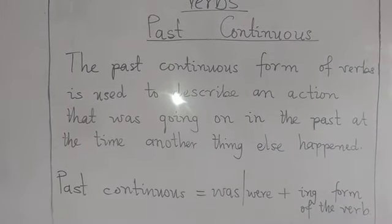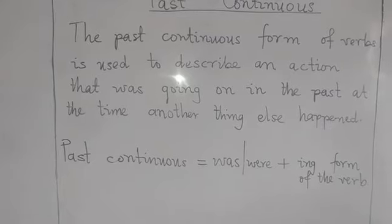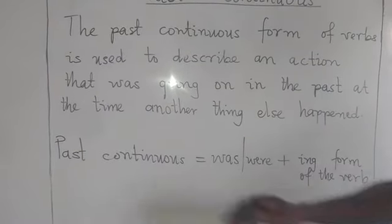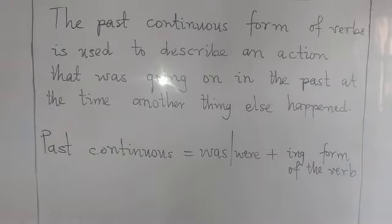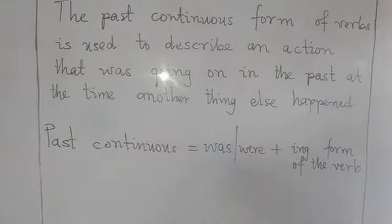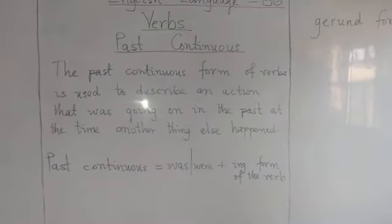Do you have any idea what the past continuous forms of verbs are? The past continuous forms of verbs are the forms used to describe an action that was going on in the past, at the time another action happened. To get the past continuous form, you must make sure that you use the auxiliary verb 'was' or 'were' in the sentence, and the verb should be in the ing form, or what we also call the gerund form.